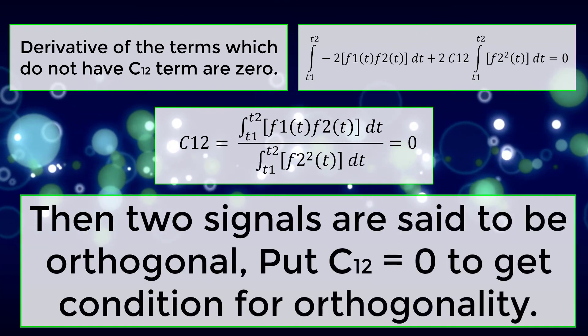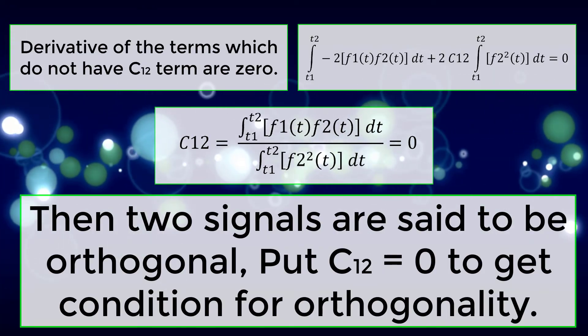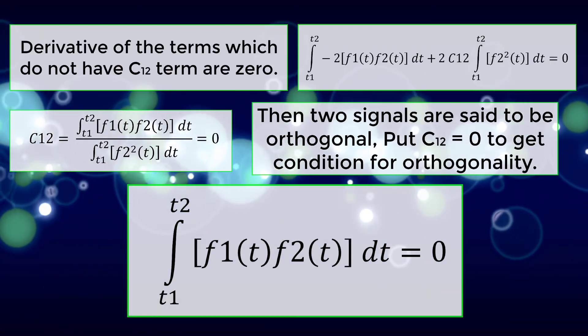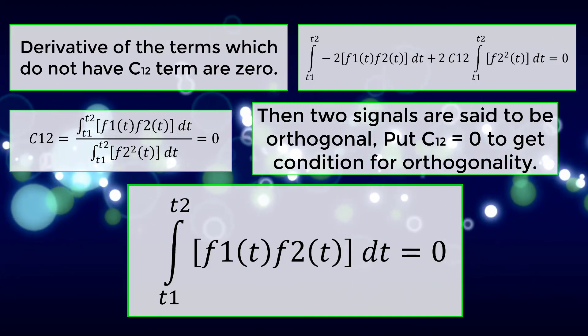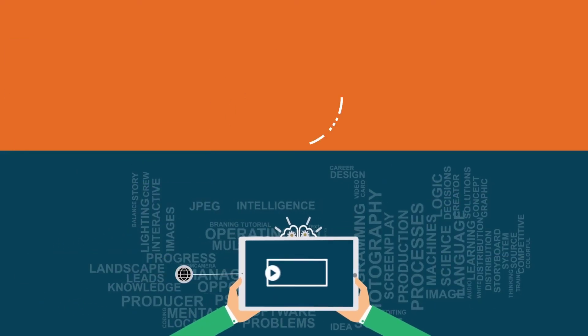Then two signals are said to be orthogonal. Put C12 equals zero to get condition for orthogonality: integral t1 to t2 of f1(t)f2(t) dt equals zero.